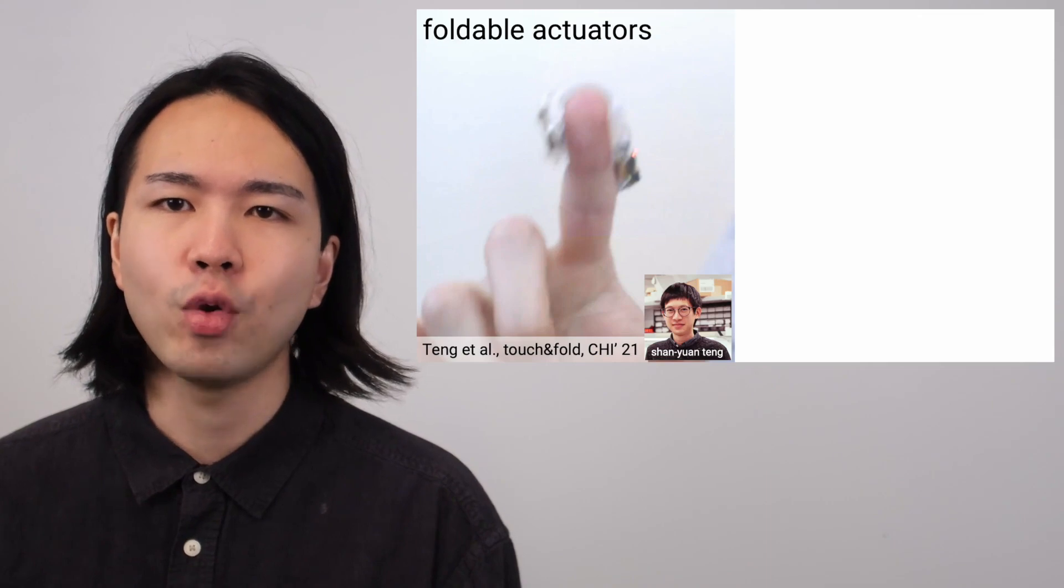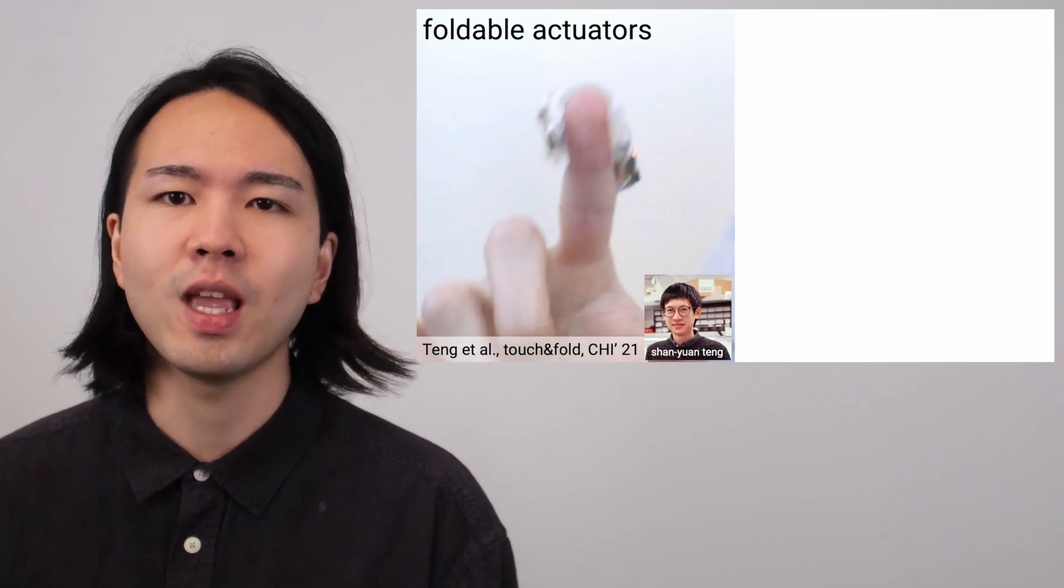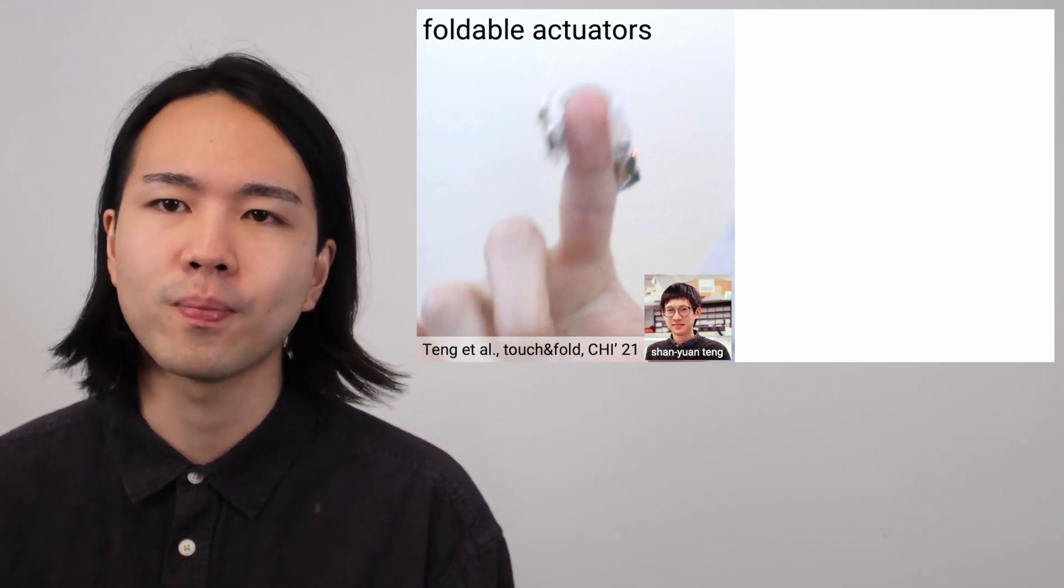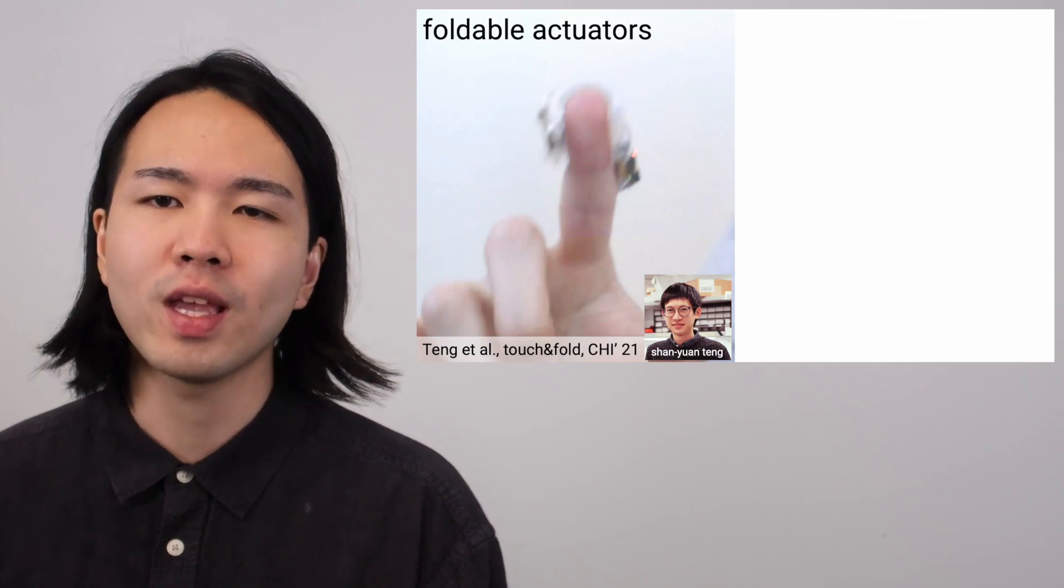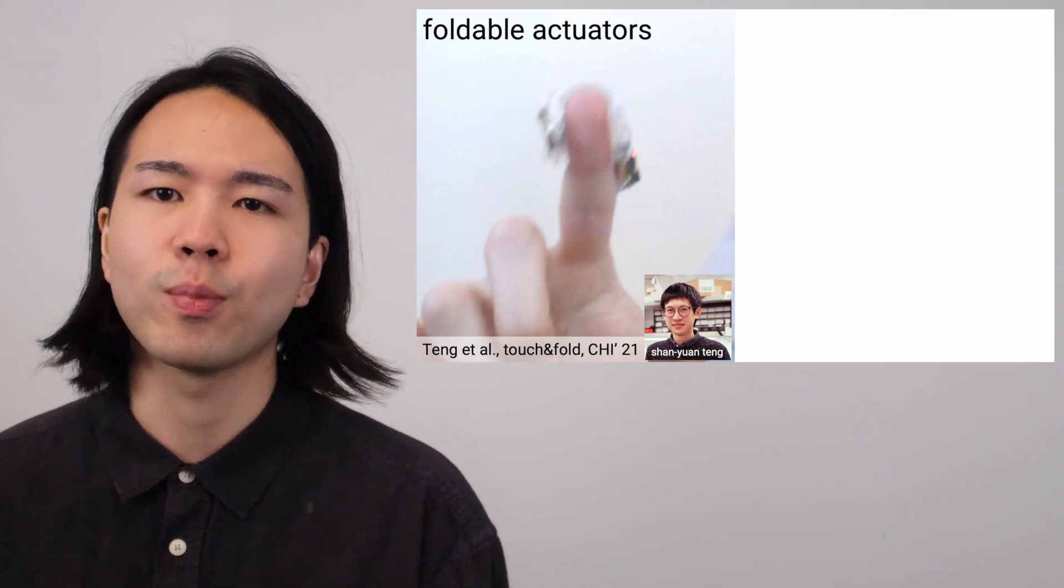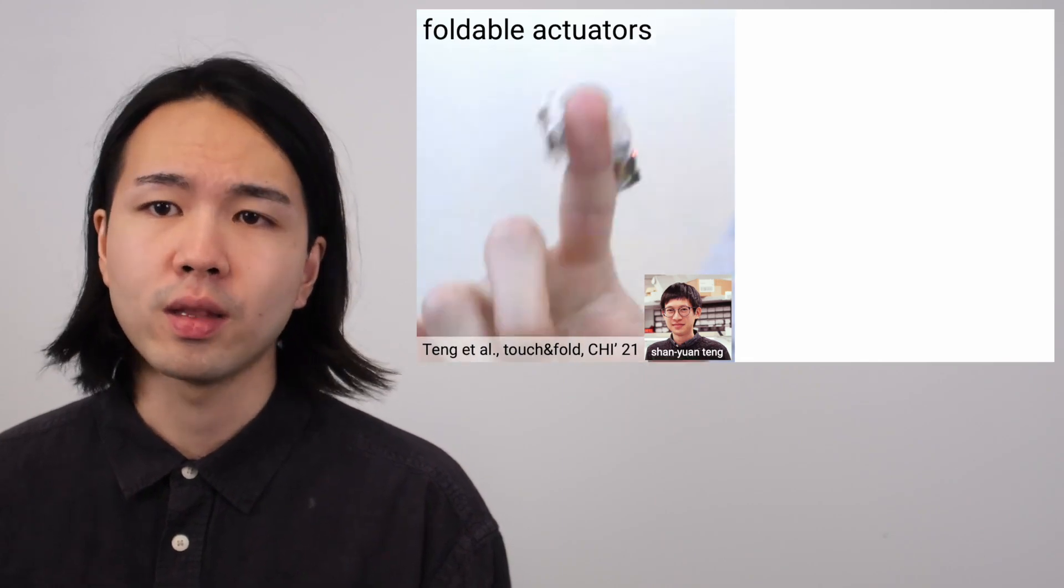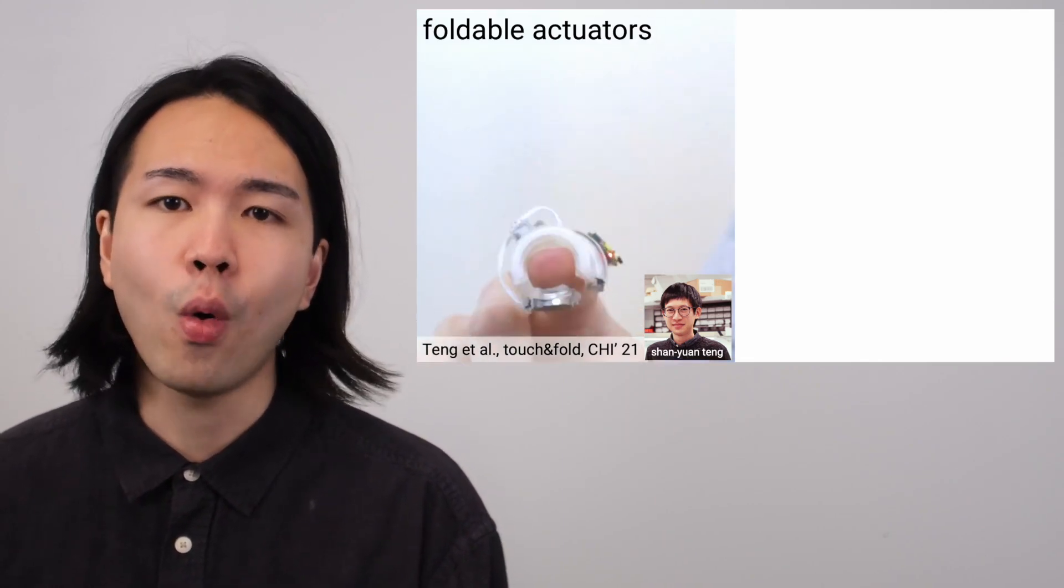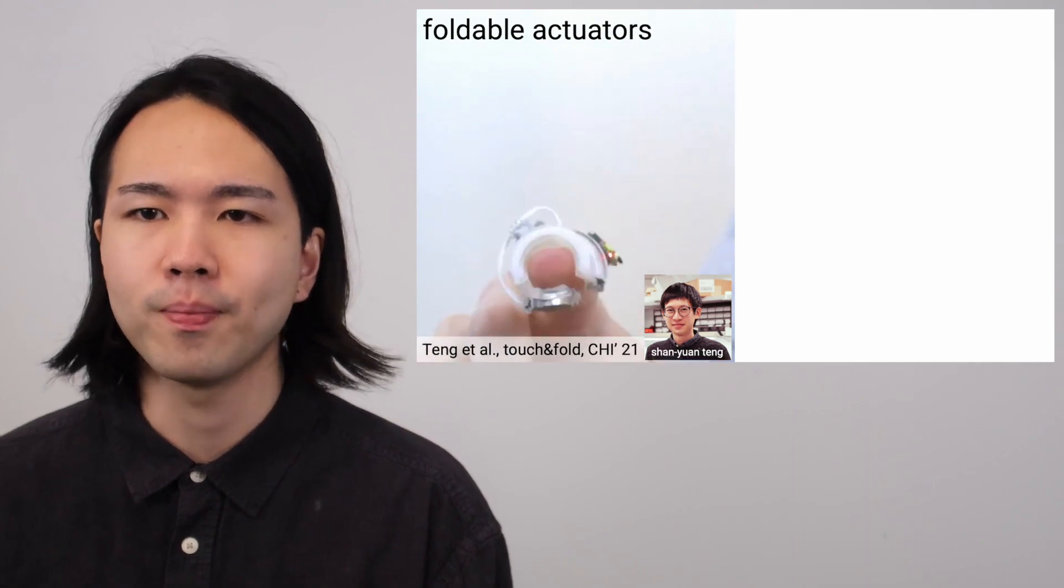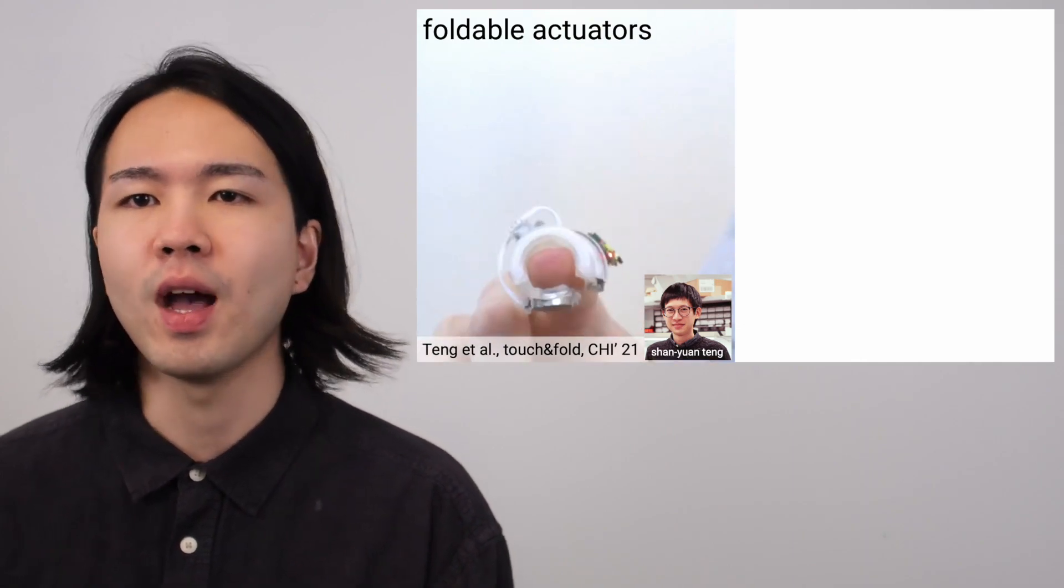There have been some attempts to engineer haptic devices that keep users feeling the real world. One example is using a foldable actuator, which was proposed by Shan Yuntang from Aorab. Here, the haptic actuator covers up the user's skin only when the virtual haptics comes in, and freeing up the user's skin otherwise.